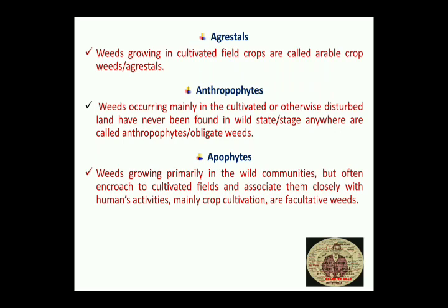The main difference is: Anthropophytes are basically associated with man or his cultivated field crops — they cannot withstand competition from volunteer vegetation in a close community. Apophytes, on the other hand, have wild communities as their primary habitat, so they grow wild in their primary habitat as well as in association with crops. The cultivated field is their secondary habitat — that is why they are called Apophytes.